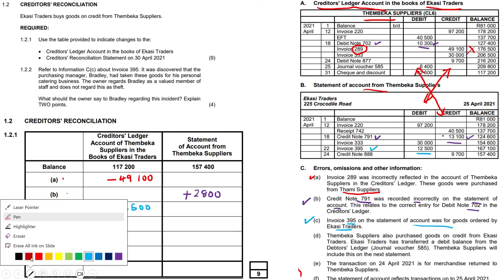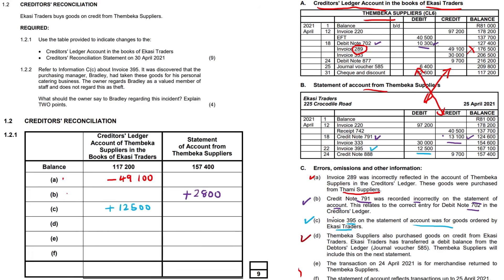Let's go to item D. Timberka suppliers also purchase goods on credit from ECASI traders — in other words, they buy from us. ECASI traders has transferred a debit balance from the debtor's ledger using journal voucher 585. Timberka's account was debited with 6,400. Timberka will include this on their next statement, so we need to remind them to consider that 6,400 that is not yet on that account.